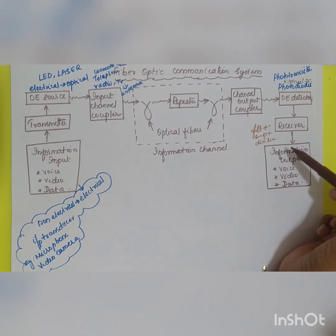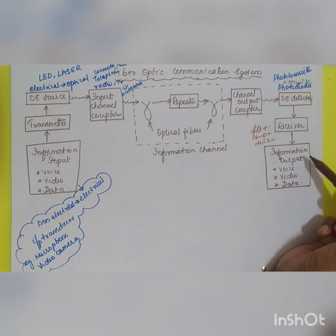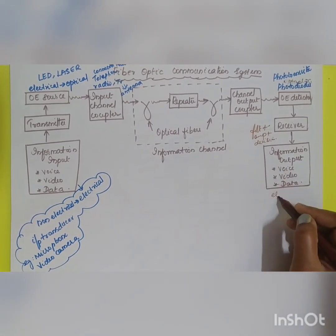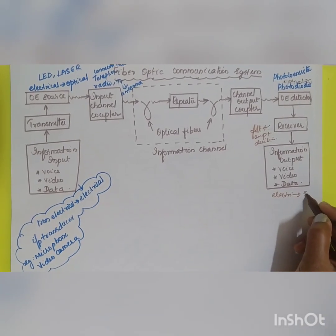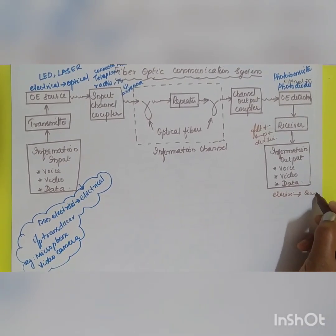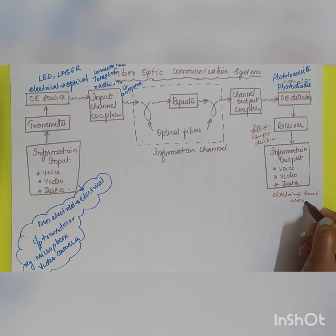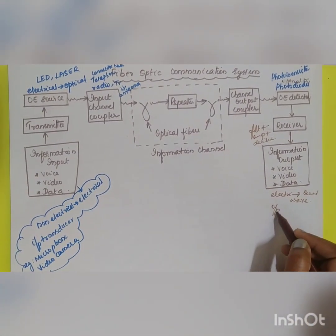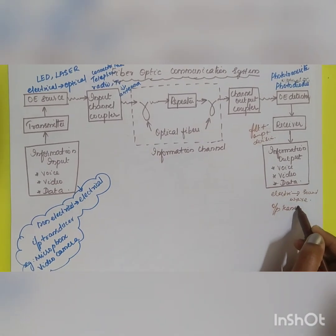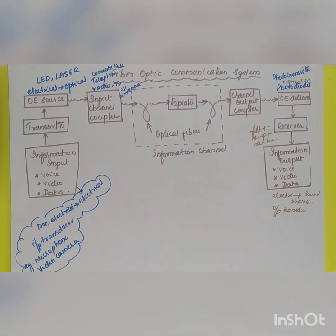The final stage is the information output, where the electrical signal is converted back into its original form — for example, a sound wave — at the corresponding destination. This is accomplished by means of the output transducer, which converts the electrical signal back into a sound wave. These are the important blocks in a fiber optic communication system.